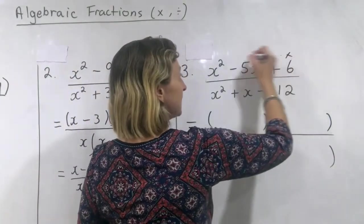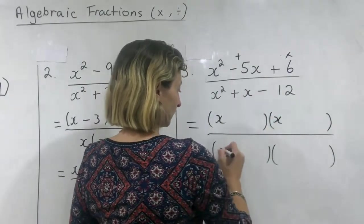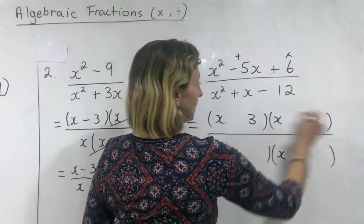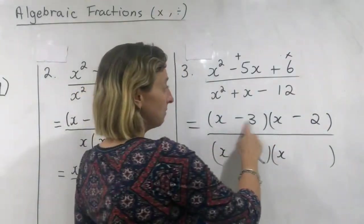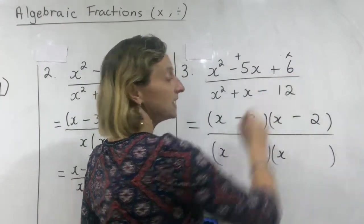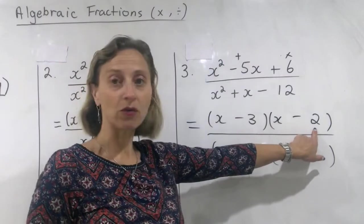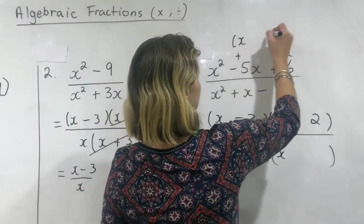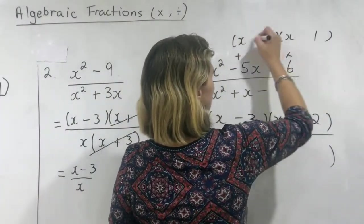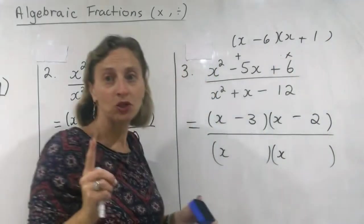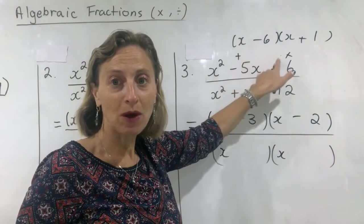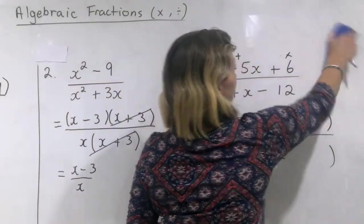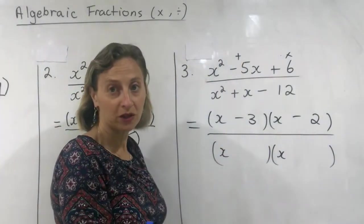Multiplies to give six, adds to give minus five. Three times two is six, and minus three minus two. Don't forget to check: minus three times minus two is plus six. If you had chosen six and one, you would have got it wrong — minus six times one will not give you the plus six at the end. So that checking at the end is very important. My factors work, so I know I've picked the correct two.